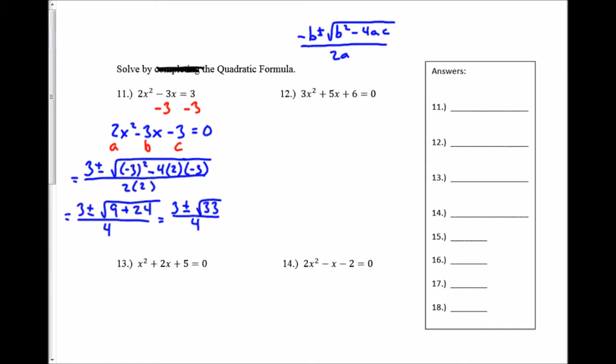Then I try to simplify this as far as I can. I look at the square root of 33. There's no perfect squares that divide evenly into 33, so this is my answer. I can leave it just the way it is.